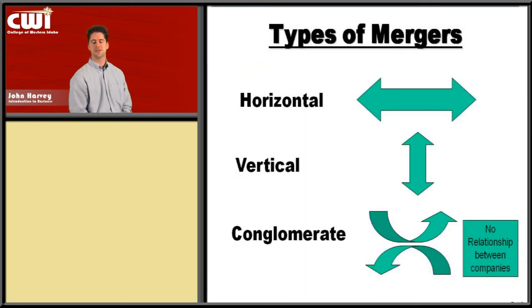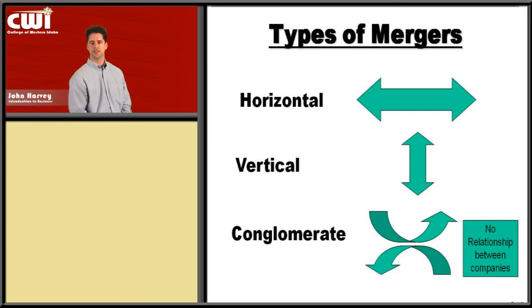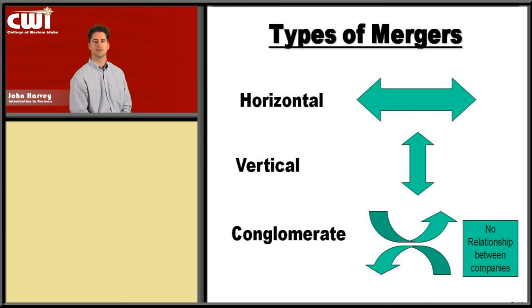Now let's talk about businesses and mergers. We have three types: horizontal, vertical, and conglomerate. In a horizontal merger, two companies in the same industry join together. A classic example would be Coca-Cola and Pepsi joining — they're in the same industry, both doing soft drinks, providing beverages, with a distribution network. That's what we call a horizontal merger.